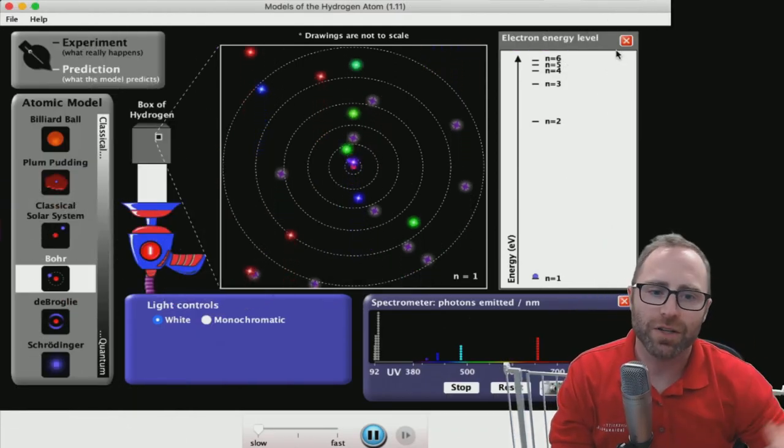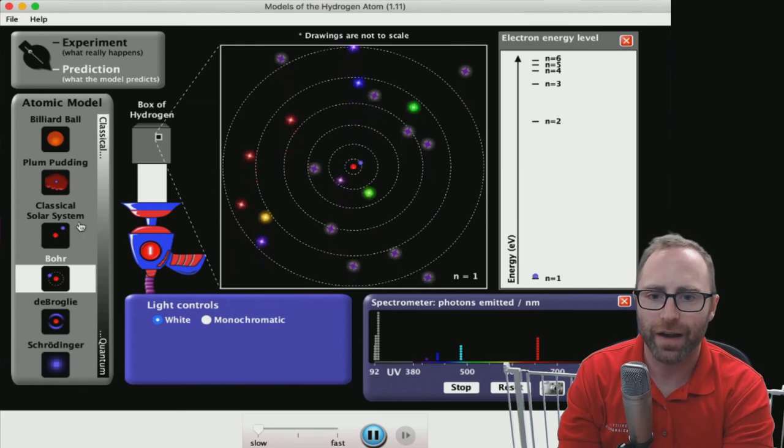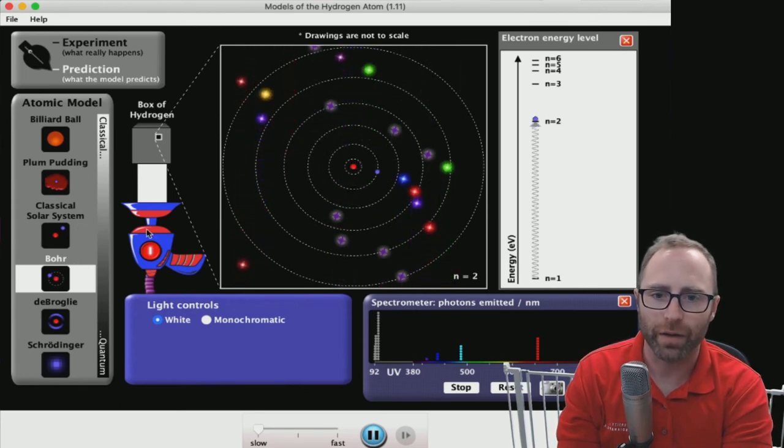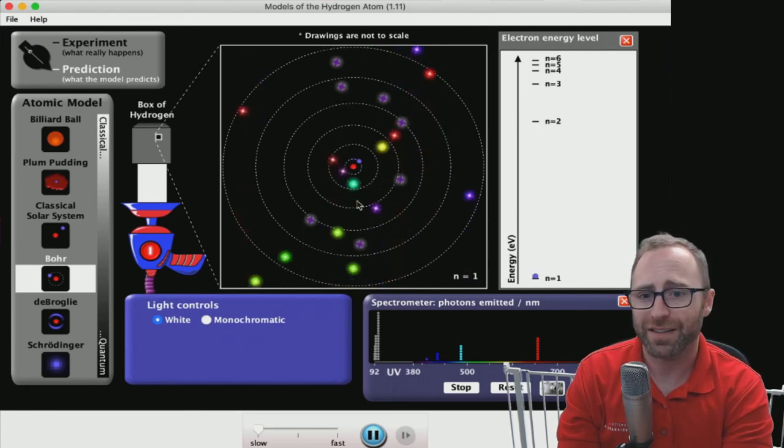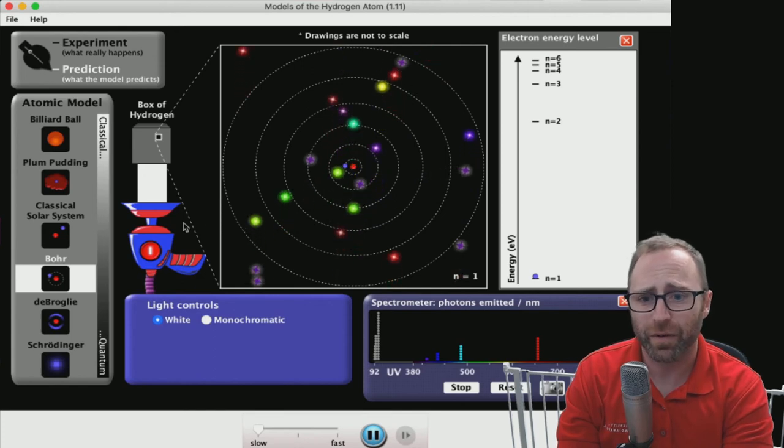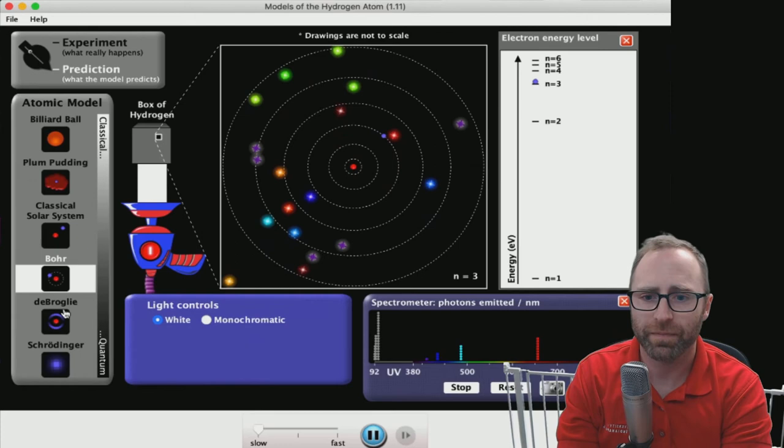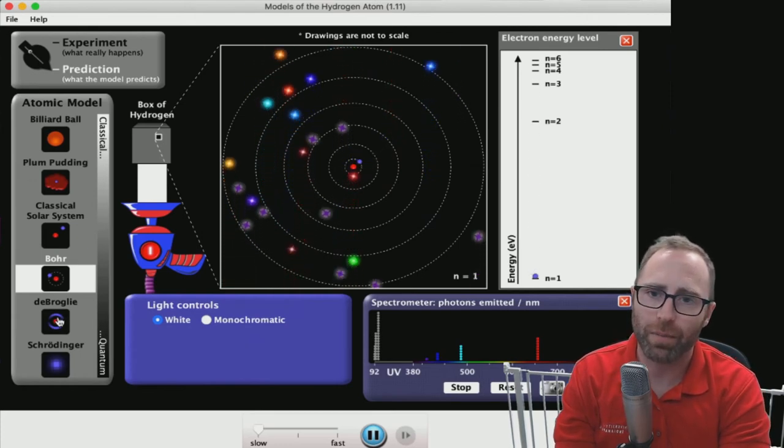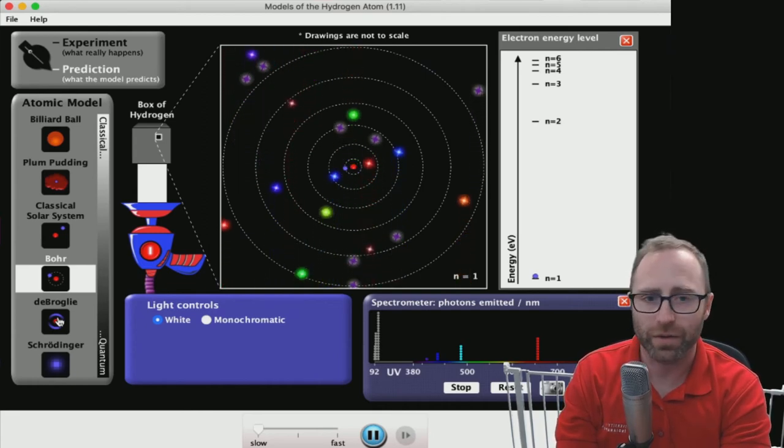So here's our simulation, and we've got this set right now such that we're looking at the Bohr model again. And we discussed what these energy levels were, but we also discussed that this system doesn't really work for multi-electron systems. So what if we apply de Broglie's wave-like properties of an electron to where an electron is with respect to the nucleus?